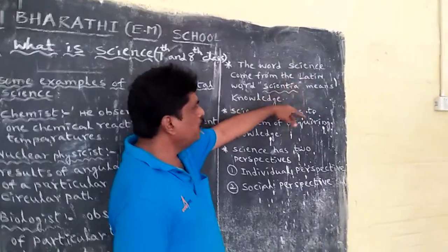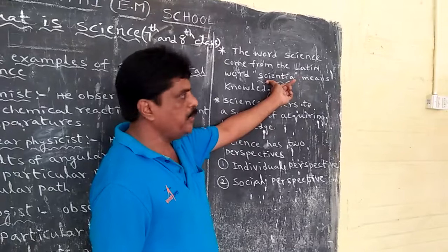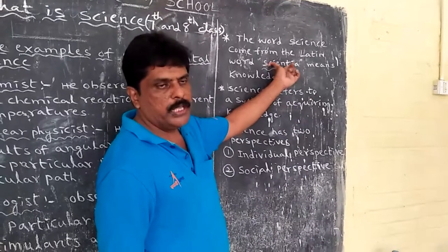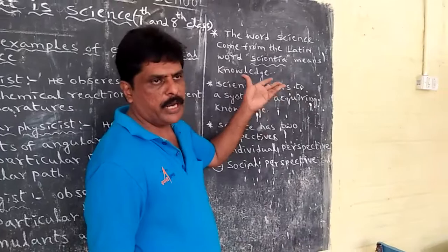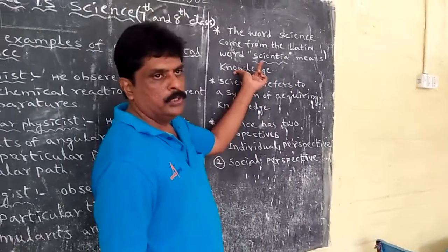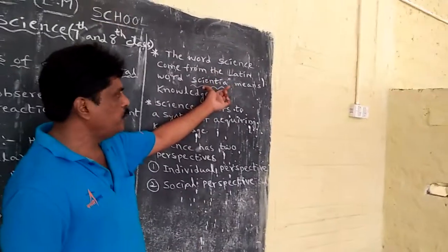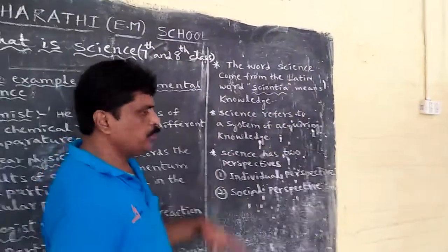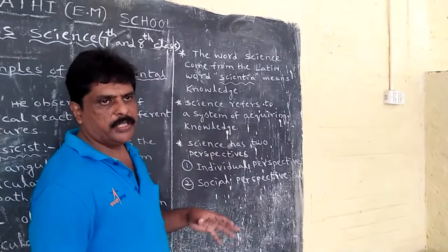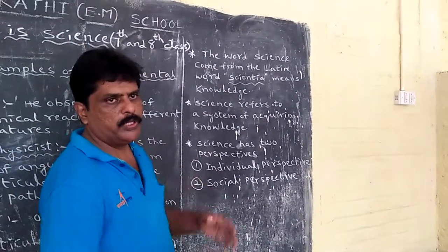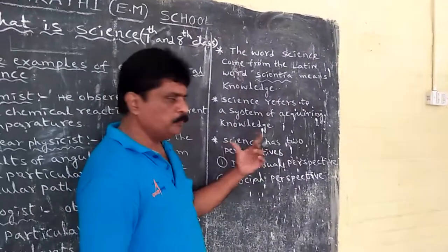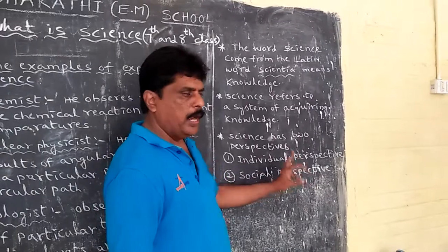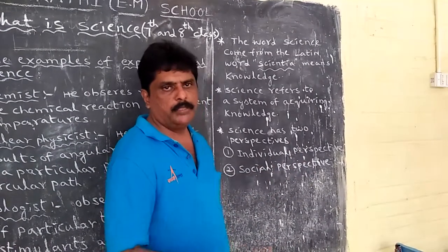The word science comes from a Latin word 'Scientia.' So science is coming from the Latin word Scientia, which means knowledge in Latin. Science refers to a system of acquiring knowledge. Science has two perspectives: the first is individual perspective and the second is social perspective, which will be explained in the next class.